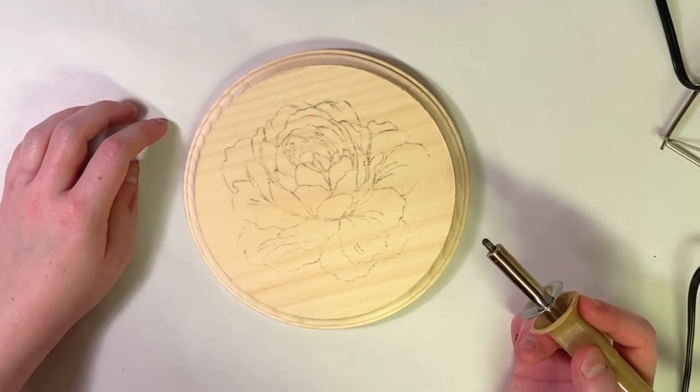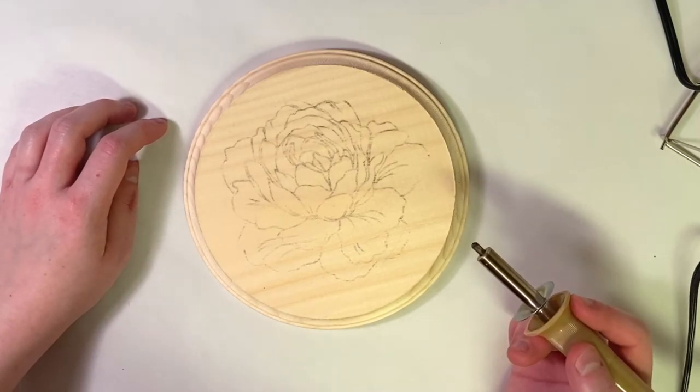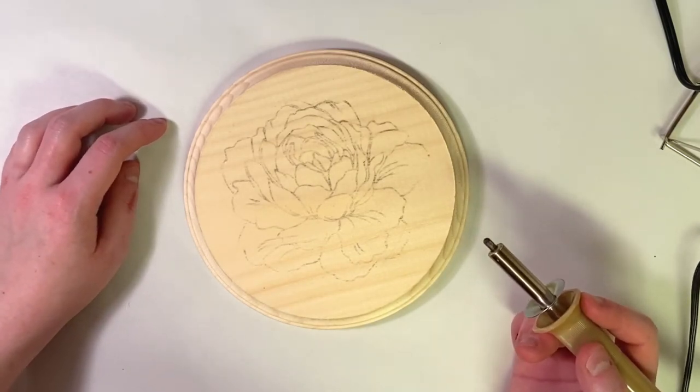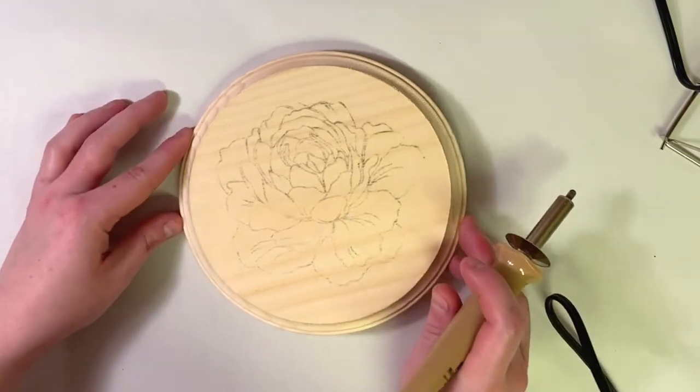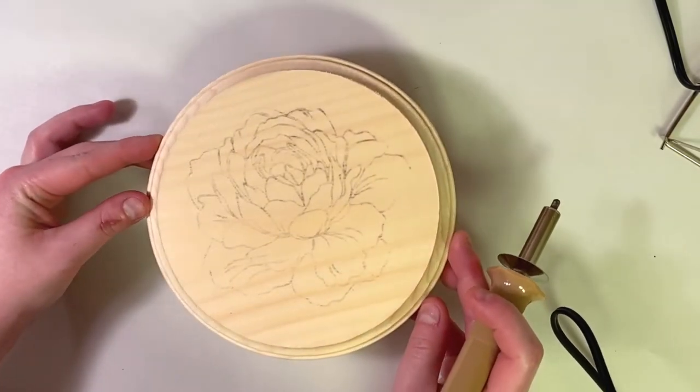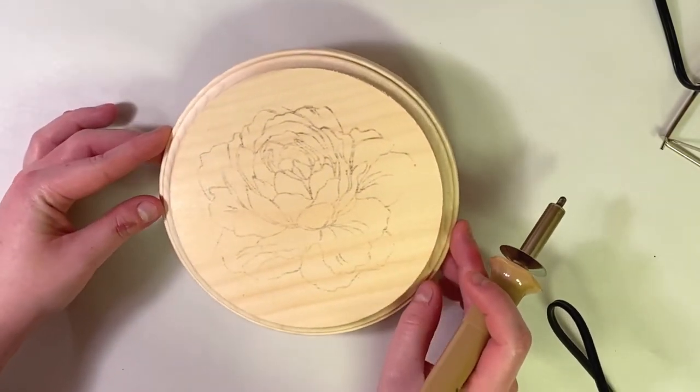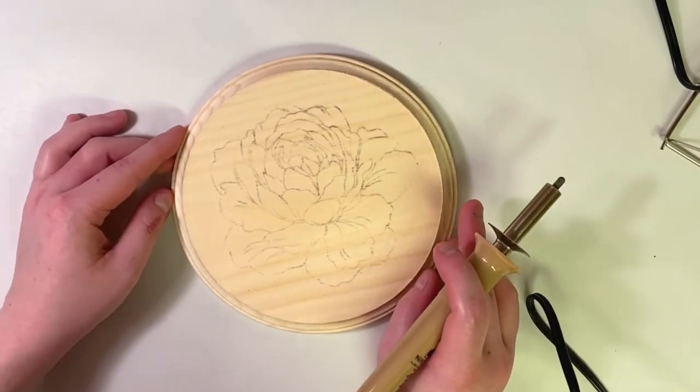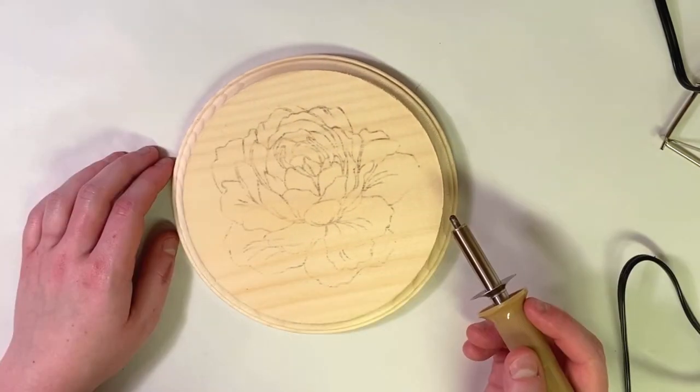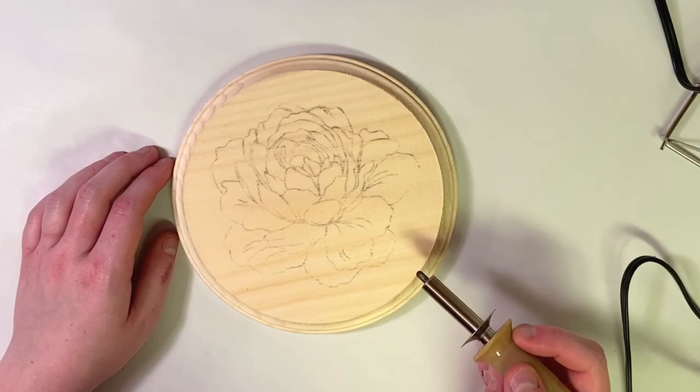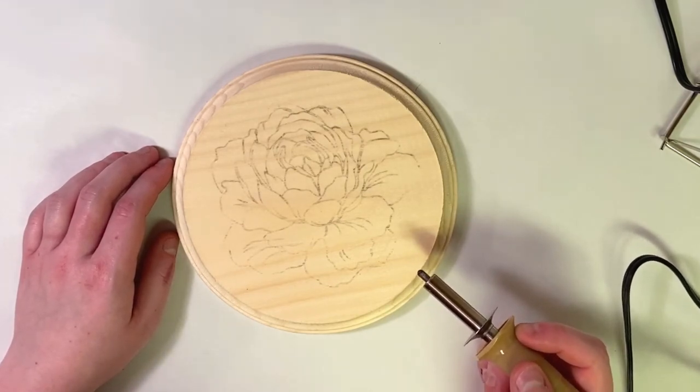So what I did was I went ahead and drew the image that I wanted to burn onto my piece of wood. You can get wood from Walmart or Hobby Lobby or Home Depot. You can decorate a cutting board, a rolling pin, really anything you want to. This is just a guide for me. It makes it a lot easier to go along as I'm burning, so it's harder to mess up. All right, let's get started.